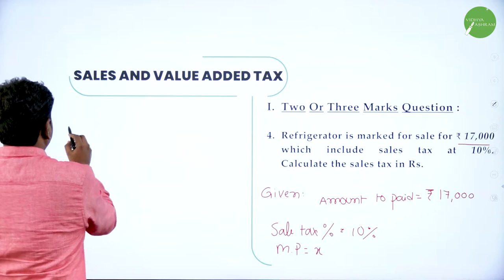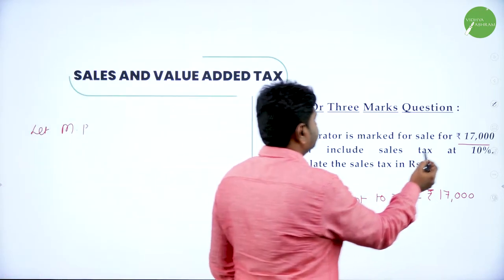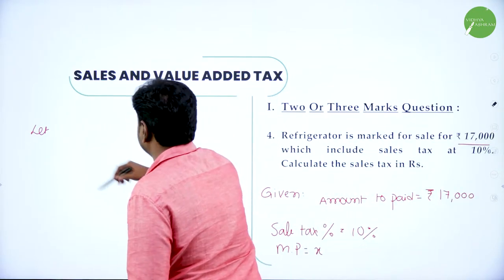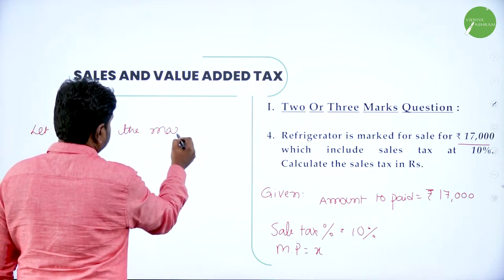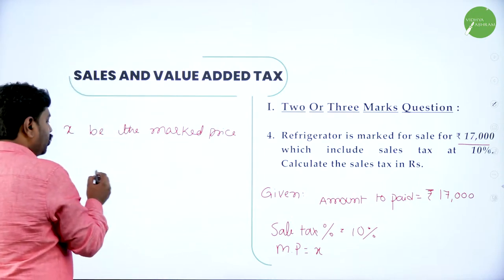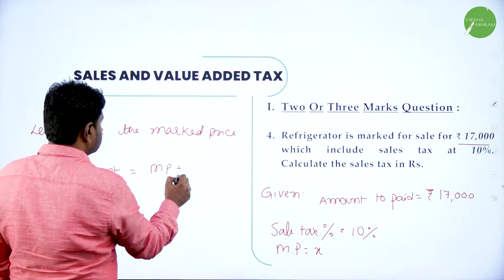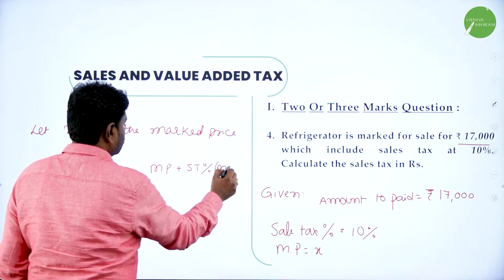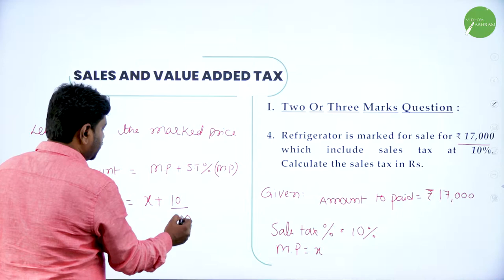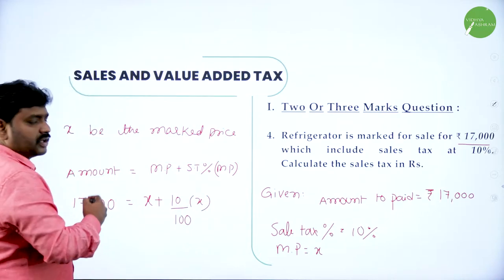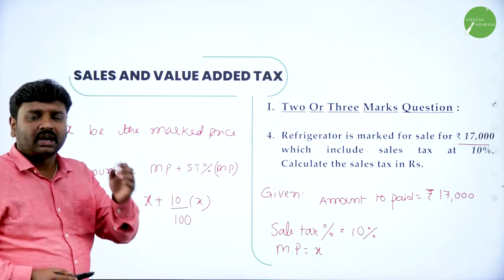Now you know the format. Let MP, or we say X, be the market price. The amount paid formula is: amount to be paid equals market price plus sale tax percent of market price. Total amount to be paid is market price plus sale tax percent of market price. Always we calculate sale tax on market price.